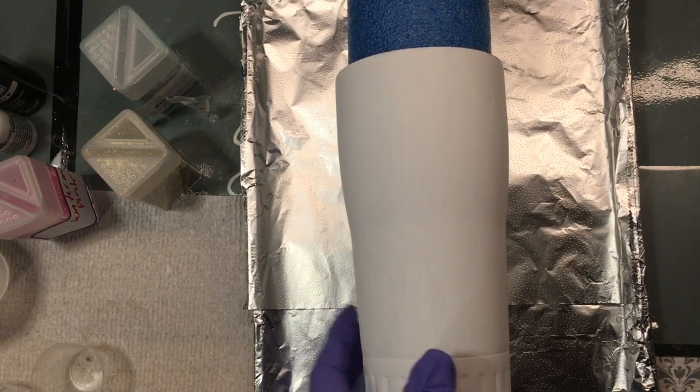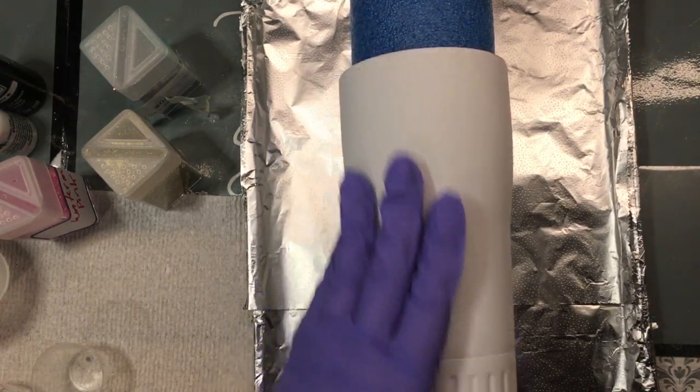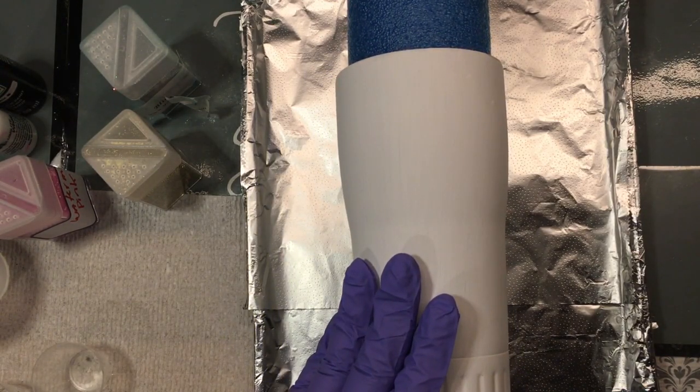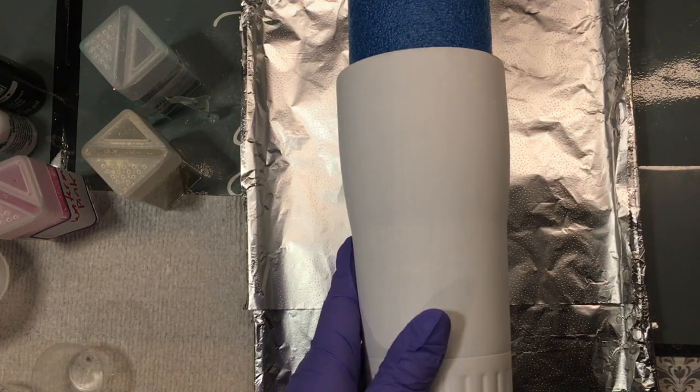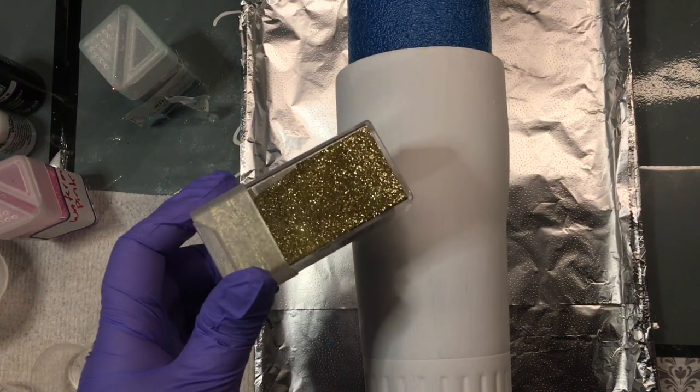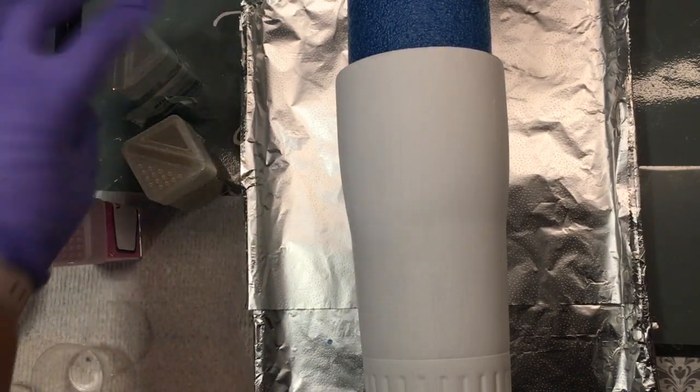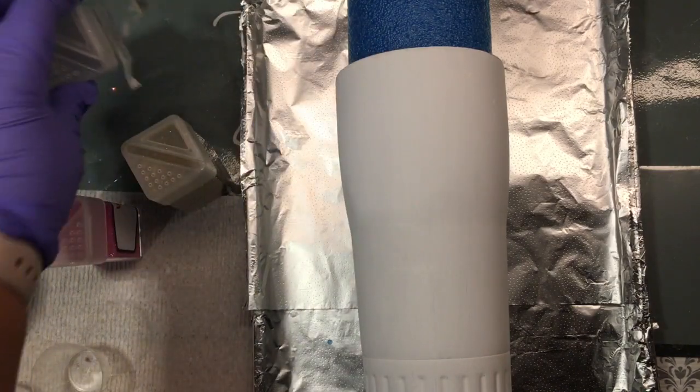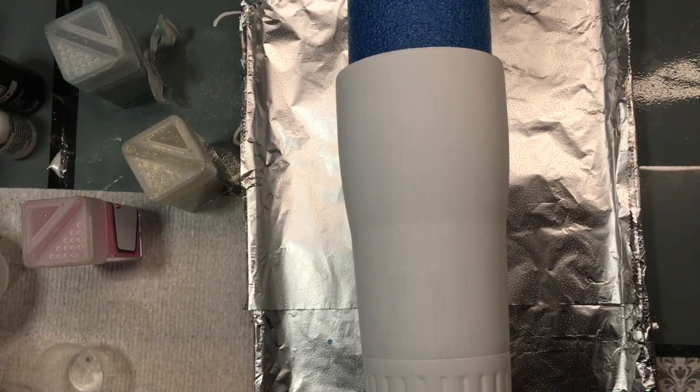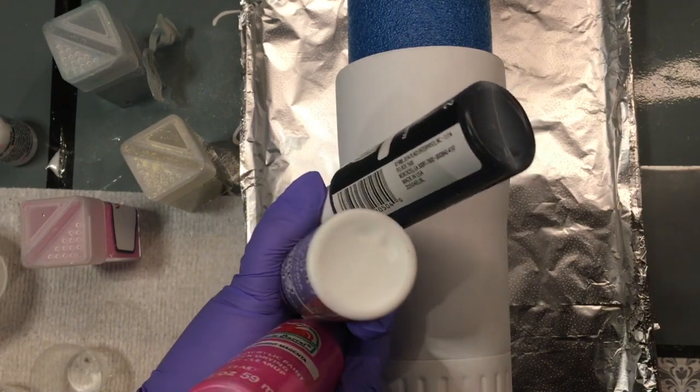Hi everybody, today we're going to decorate this cup. It's already been primed - I painted it white with some chalk paint. I'm probably going to be using some gold glitter, some pink glitter, some silver glitter, and I'm also going to use some acrylic paints: white, black, and pink.